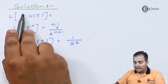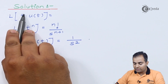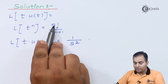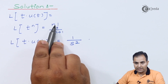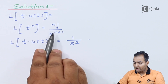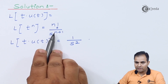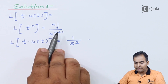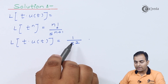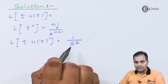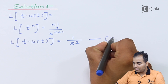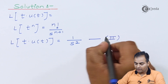To confirm: n = 1, so 1 factorial = 1 and s raised to n+1 = s². Therefore L{t·u(t)} = 1/s². This is equation number 2.